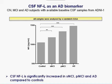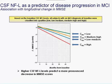Traditionally neurofilament light has not been regarded as an Alzheimer's disease biomarker — more a marker of subcortical degeneration or spinal cord injuries. But when we examined the ADNIC cohort for CSF neurofilament light concentrations, we could see a clear elevation of the concentrations in Alzheimer's disease.